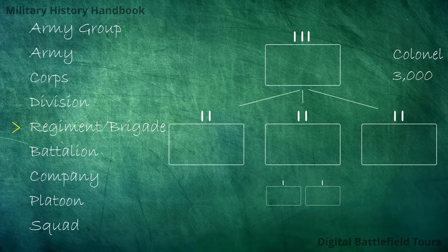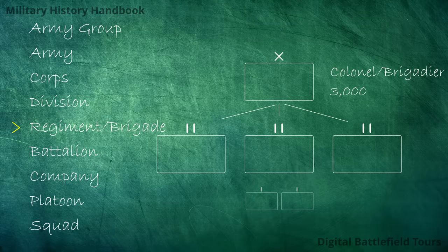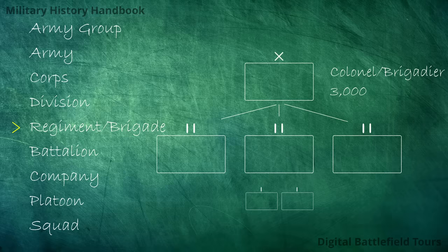A brigade, on the other hand, has the size of a regiment but is a mixed combined arms unit — it doesn't just contain battalions of a single arm, but mixed battalions: infantry, tanks, and artillery mixed together. This makes it independent. So just like a division, it is an autonomous combined arms unit, but at a smaller level. It's smaller than a division but still capable of autonomous combined arms action.